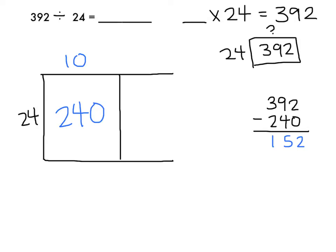So now I need to think what times 24 can get me close to 152. Well, if 24 times 10 is 240, then 24 times 5 would be half of that, which would be 120.